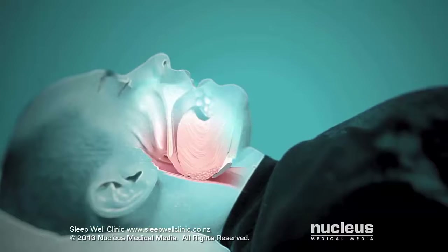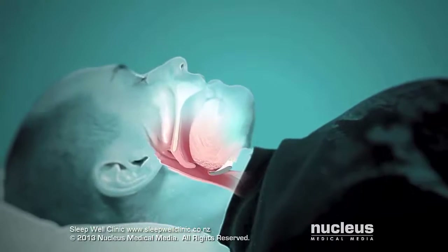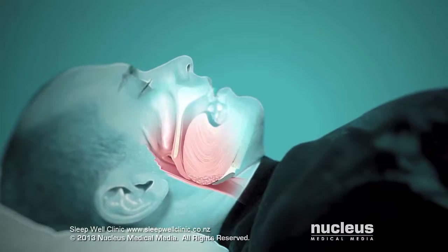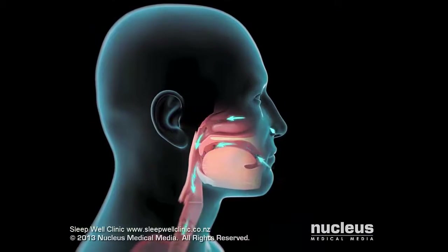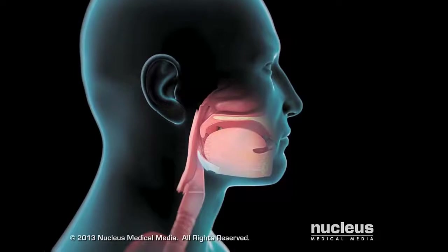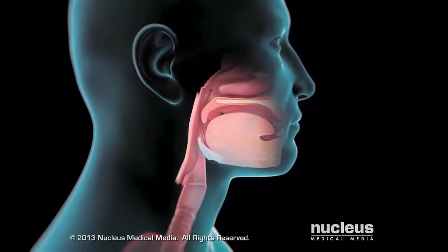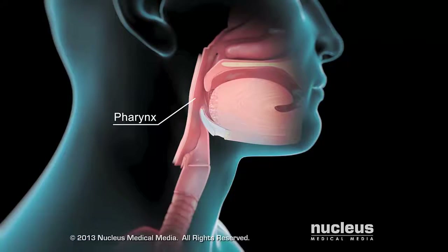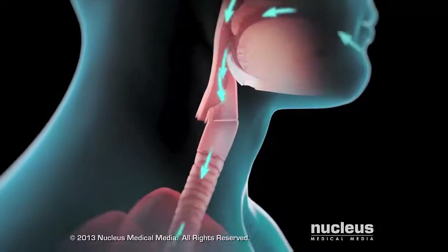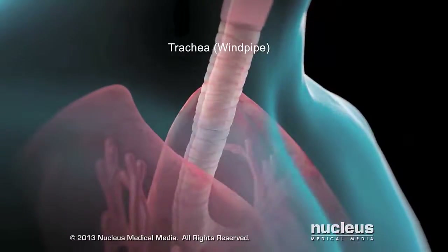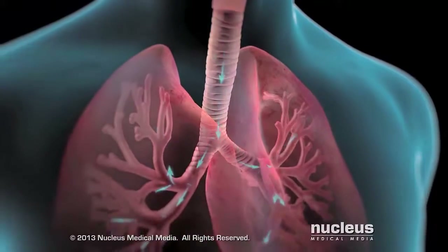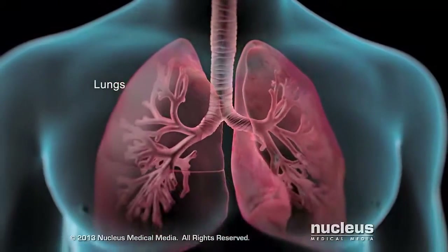If you have obstructive sleep apnea, your breathing pauses for brief periods while you're asleep. Normally when you breathe in, air flows in through your mouth and nose and down your throat, also called the pharynx. Air then flows down your windpipe, or trachea, spreading through a tree-like structure of smaller tubes into your lungs.